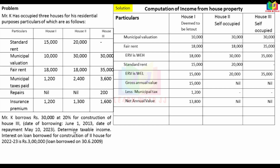Additional information: Mr. K borrows Rs. 30,000 at 20% for construction of house 3. Date of borrowing is June 1, 2013. Date of repayment is May 10, 2023. Also, interest on loan borrowed for construction of the second house for FY 2022-23 is Rs. 3,00,000.